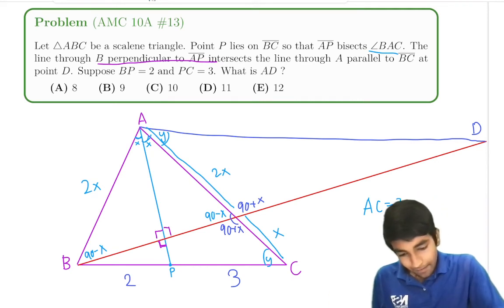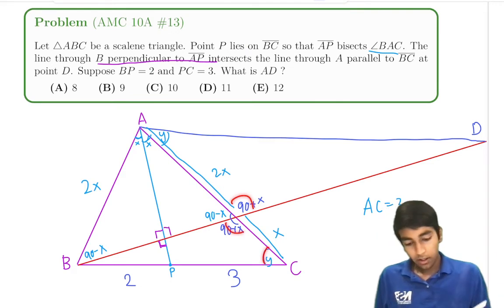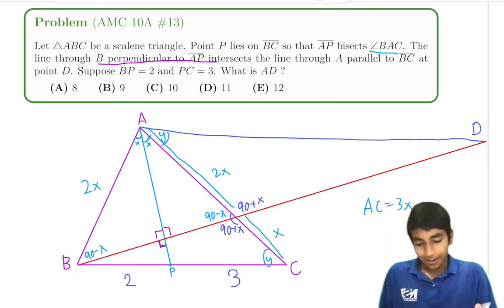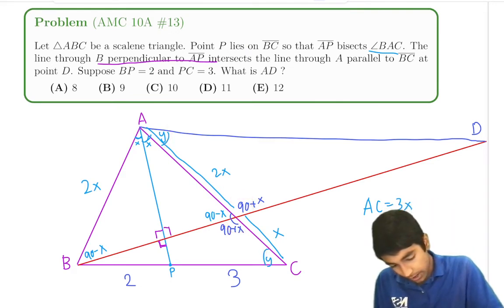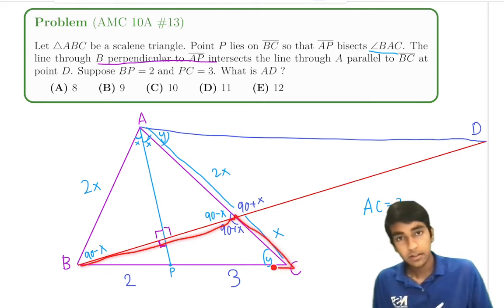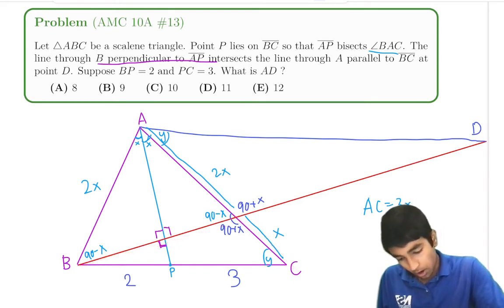And therefore one angle is equal, two angles are equal, those triangles are similar. And by those triangles I mean this triangle right here and the top one, this one right here, by AA similarity.